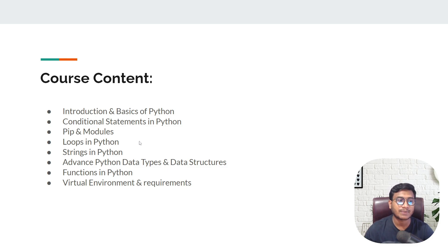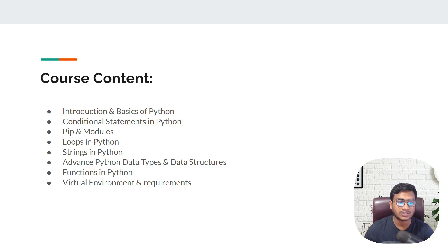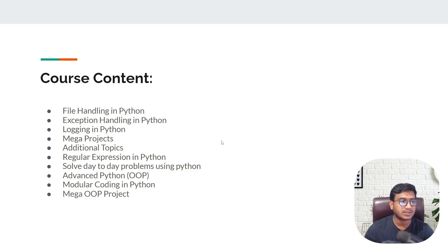Then we'll start with conditional statements, pip modules, loops in Python, and strings in Python. We'll also discuss advanced Python data types and data structures like lists, tuples, sets, and dictionaries. Once we complete those data structures, we'll move into functional programming — what functions are and how to write them. We'll also learn about virtual environments and requirements files, why we need them when implementing any kinds of projects.